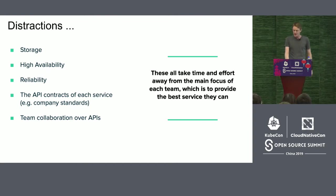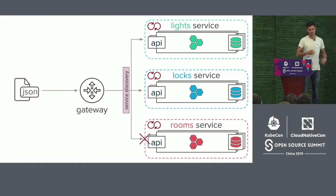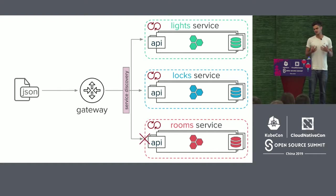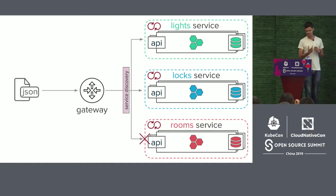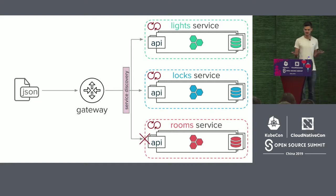Maybe there's a better way. We very well could have written this service with microservices and Kubernetes would be a great tool to deploy them using deployments and pods. However, given that the Kubernetes API has all these great features, could we actually build our service on top of the Kubernetes API — not using Kubernetes as a container scheduler, but using its API to solve this business problem?